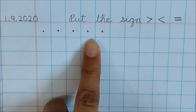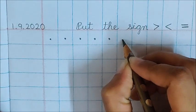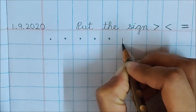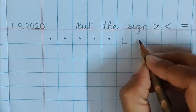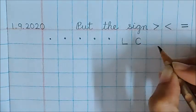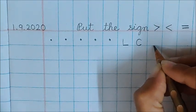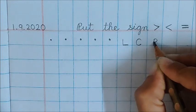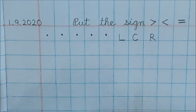Children, this setting you will do. In the next box, write down here L. Then, in the next box, write down C. And here, write down R.